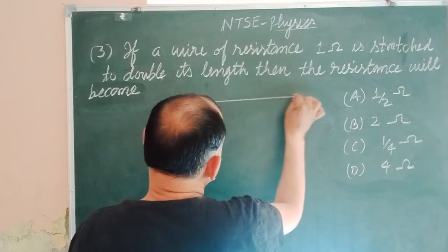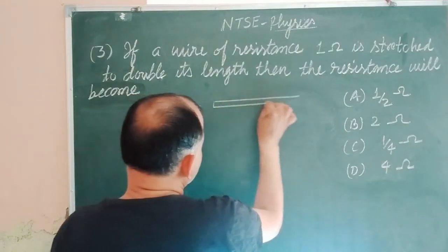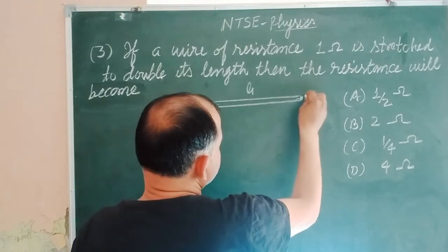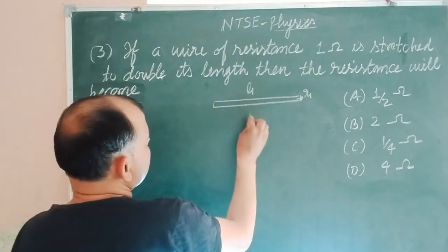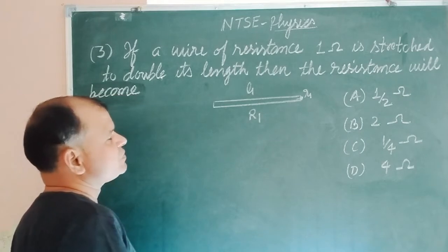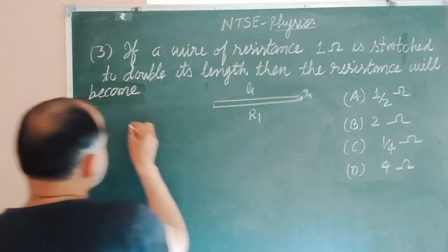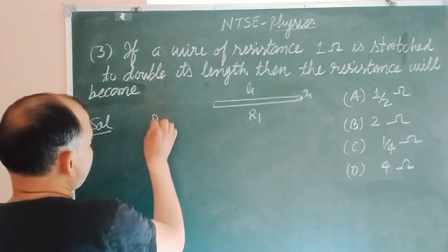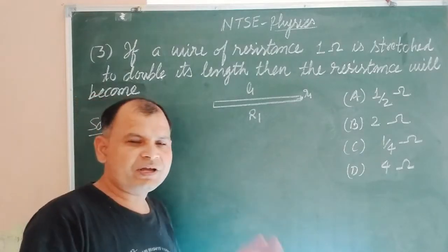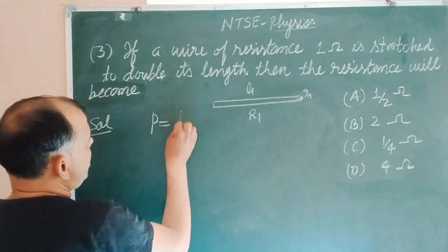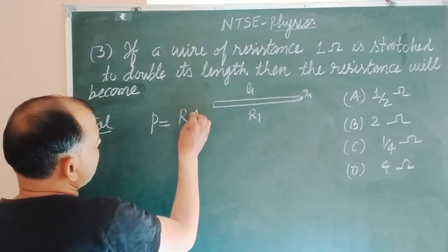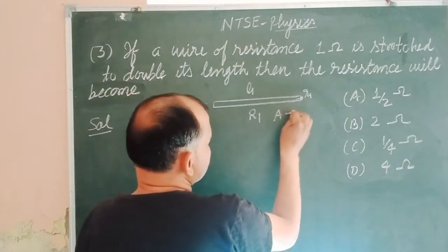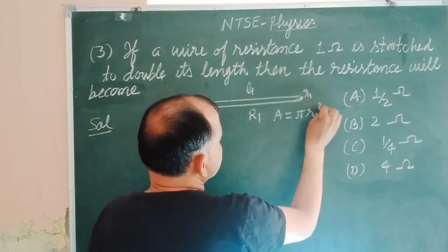First, we take a wire of length L1, with cross-sectional radius R1, and resistance R1. We know that the resistivity of the wire or conductor is rho equal to R times A over L, where A is the cross-sectional area. So A equals pi R1 squared.